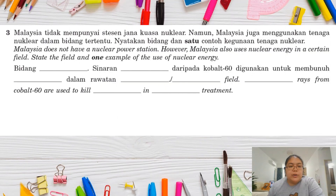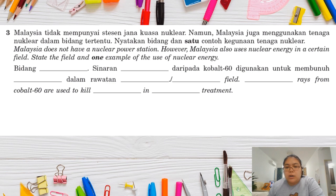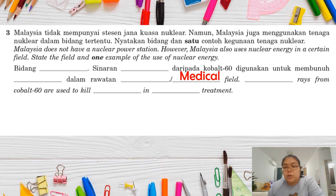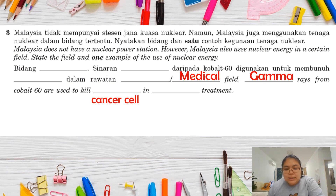Question three: Malaysia does not have a nuclear power station, but Malaysia still uses nuclear energy in certain fields. The question mentions cobalt-60, which is used in the medical field. Cobalt-60 emits gamma rays, which are used to kill cancer cells. The treatment is called radiotherapy.